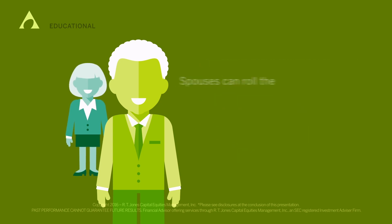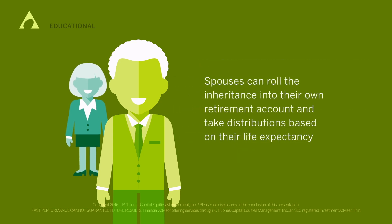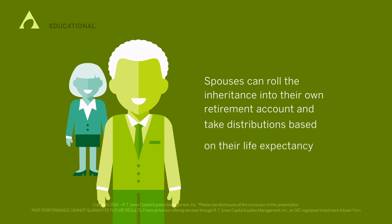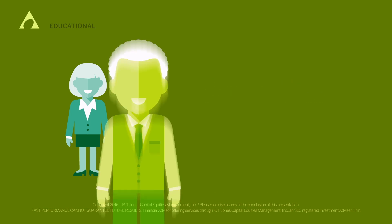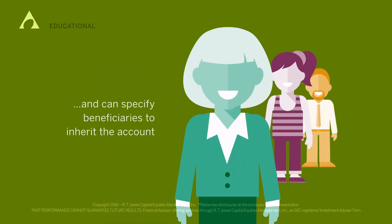Spouses have special treatment under the tax code. They can roll the inheritance into their own retirement account and take distributions based on their life expectancy, and they can specify beneficiaries to inherit the account.